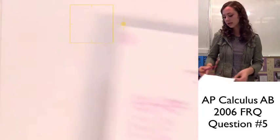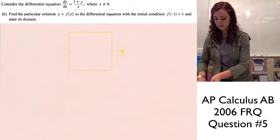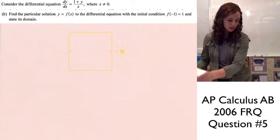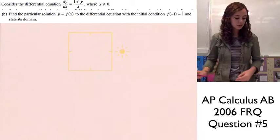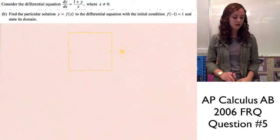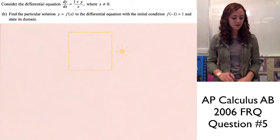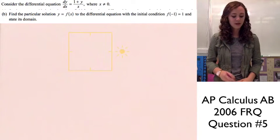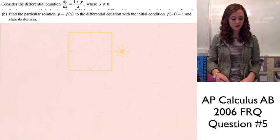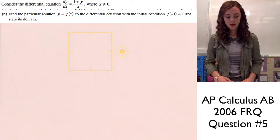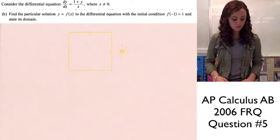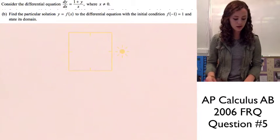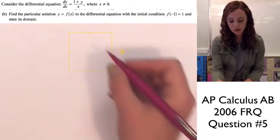On to part B of this question. It says: find the particular solution y = f(x) for the differential equation with the initial condition f(-1) = 1, and state its domain. We know that the initial condition f(-1) = 1 corresponds to the point (-1, 1).